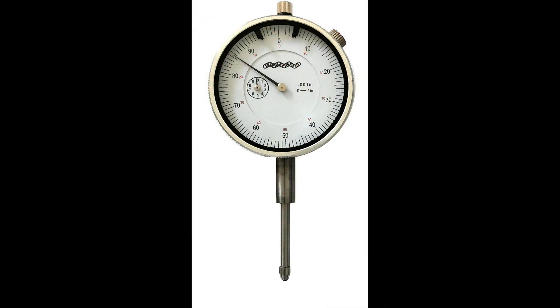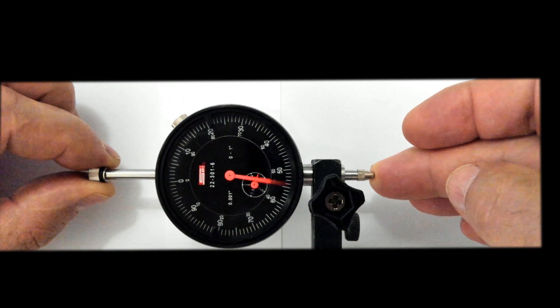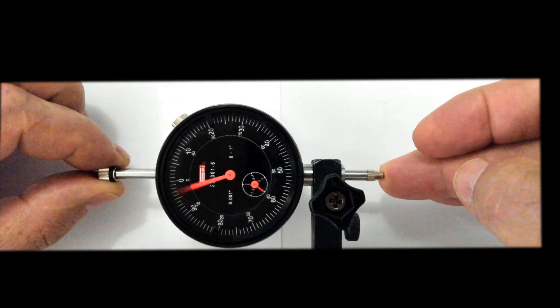Standard dial indicators. The one inch travel of the plunger causes the dial to rotate ten times. Each rotation equals one hundred thousandths of an inch.